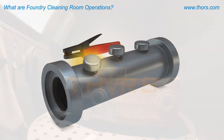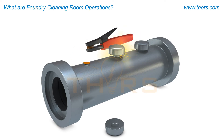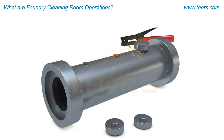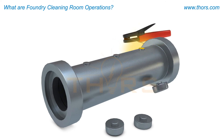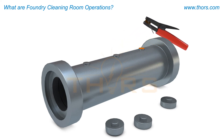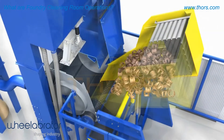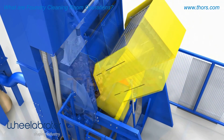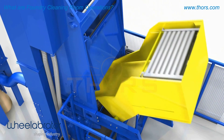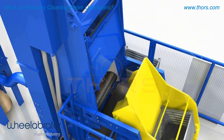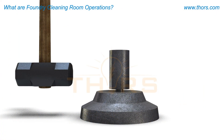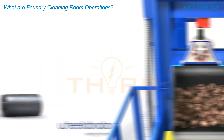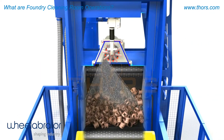The final stage of manufacture is cleaning. Foundry cleaning room operations are a collection of processes that improve the finish of raw castings and remedy minor non-conformances in the casting. These cleaning room operations are referred to as fettling in some foundries. The cleaning processes include removal of excess metal from the casting and surface cleaning with abrasive media.